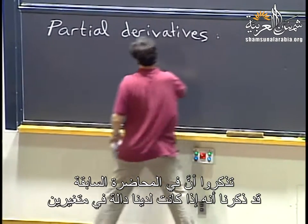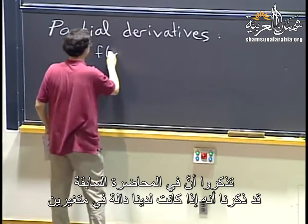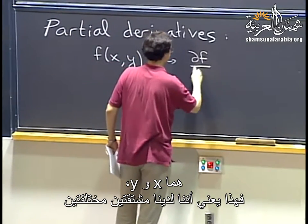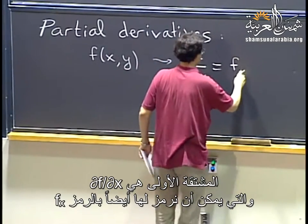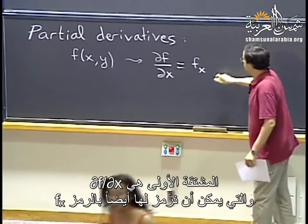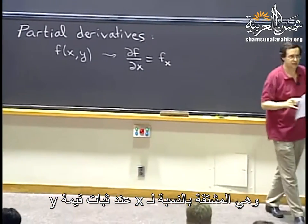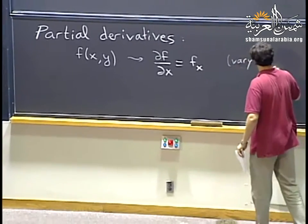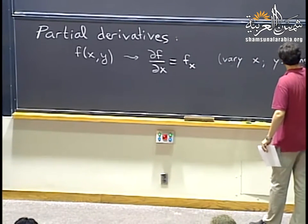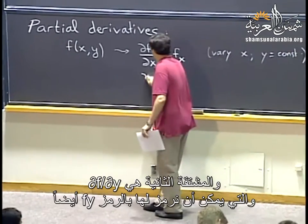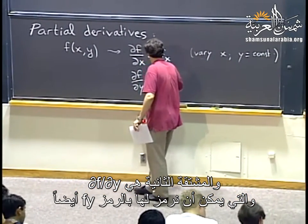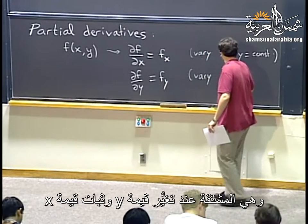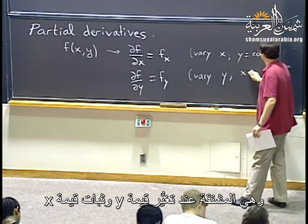Remember last time we said that when we have a function of two variables, x and y, then we have actually two different derivatives. Partial f, partial x, also called f sub x, is the derivative with respect to x keeping y constant. And we have partial f, partial y, also called f sub y, where we vary y and we treat x as a constant.